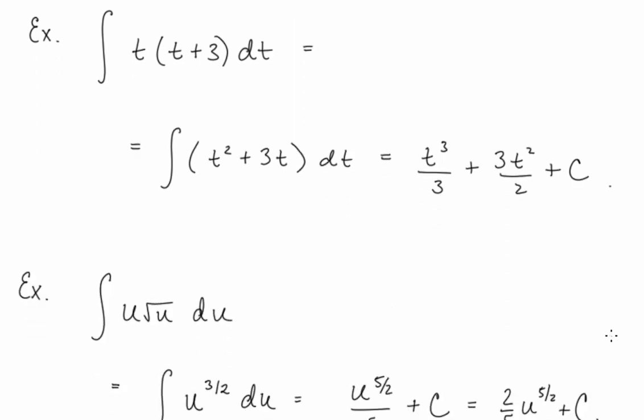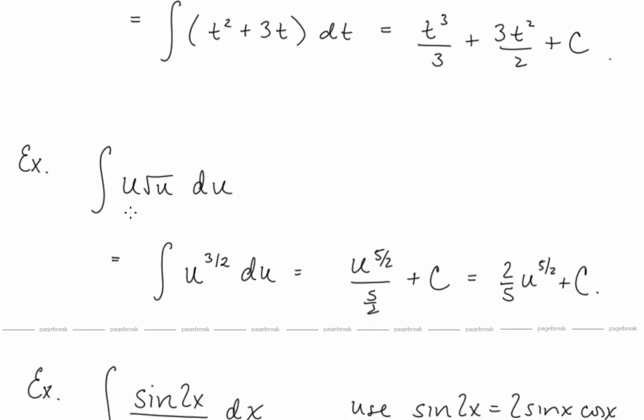Let's take a look at another. Integral of u radical u du. Again, we don't have a rule for a product of functions, so we want to write this as u to the 3 halves power before we take an antiderivative. Now we'll take an antiderivative by adding 1 to the power and dividing by that number. So we have 2 fifths u to the 5 halves plus c. So again, this notation, this indefinite integral, just means take the antiderivative, the general antiderivative.